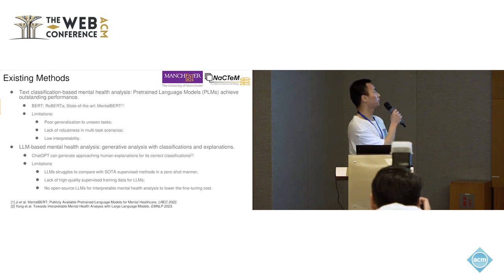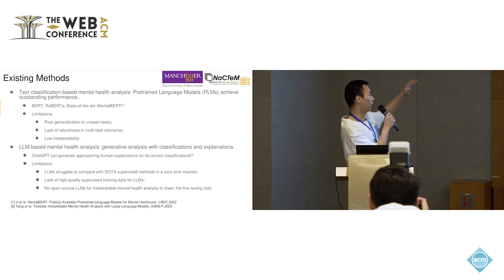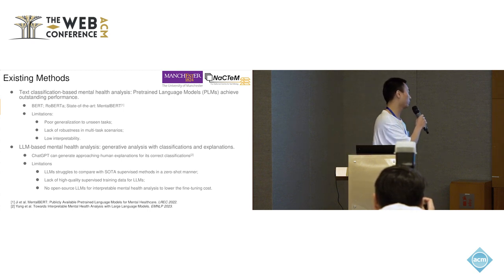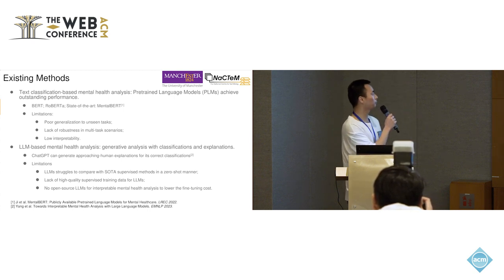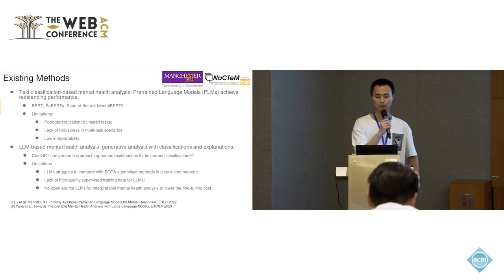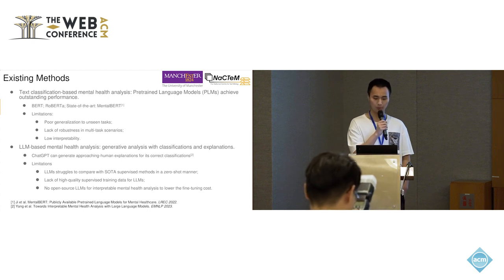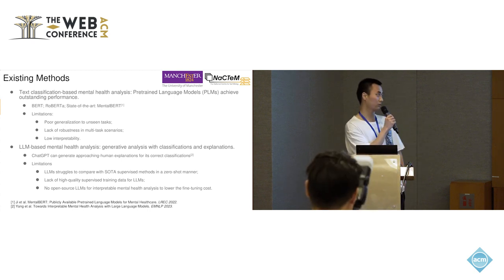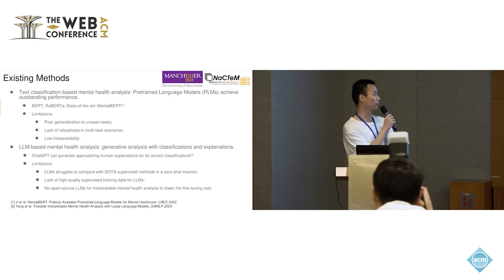Existing methods of mental health analysis mainly consist of two streams. The first one is the text classification-based methods, and the second one is the LLM-based methods. Text classification-based methods are mainly based on pre-trained language models which achieved outstanding classification performance, where representative works include BERT, RoBERTa, and the state-of-the-art method MentalBERT.